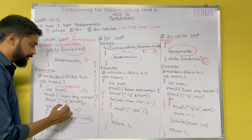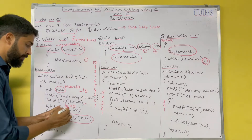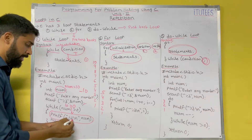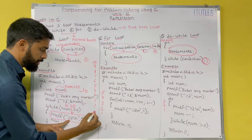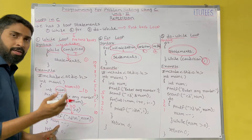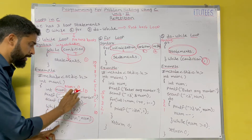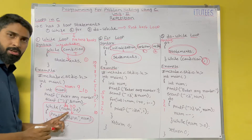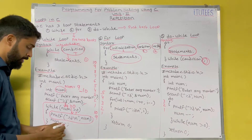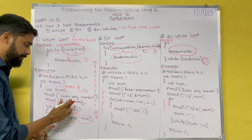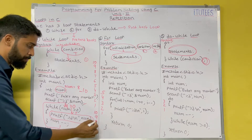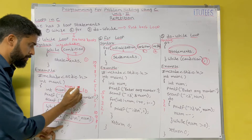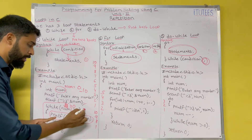While NUM is greater than 0 — with initial value 10, the condition is true, so we enter the block. Printf prints 10, then NUM-- decrements NUM to 9. Again the condition 9 > 0 is true, print 9, NUM becomes 8, and so on. When NUM becomes 1, print 1, NUM-- makes it 0. Now 0 > 0 is false, so we terminate the loop.